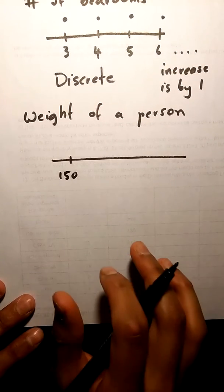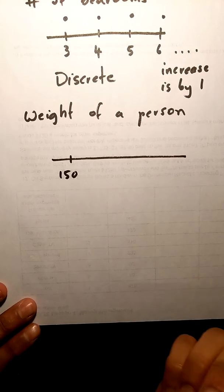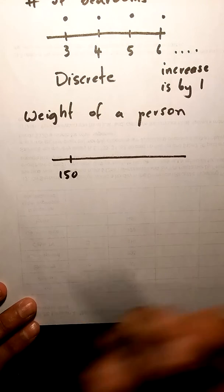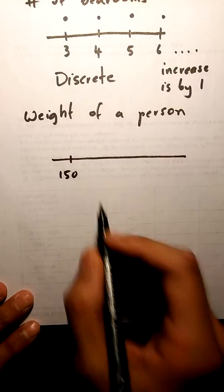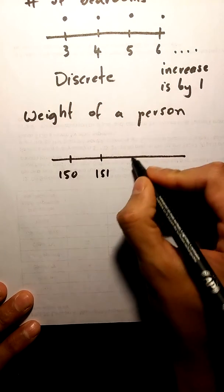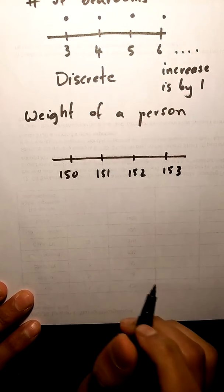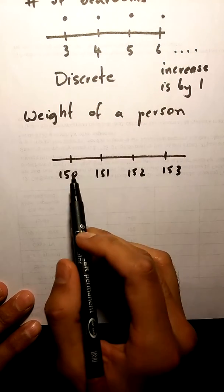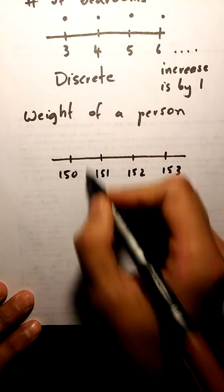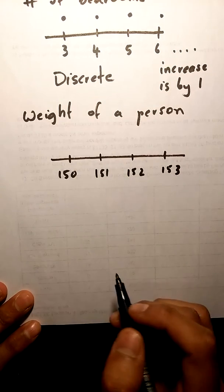If I want to increase this weight, what could I pick? Well, I could pick honestly any number I wanted bigger than 150. So what I'm gonna do is I'm gonna pick 151, 152, 153. Now if I'm looking between these values, can I pick a value between 150 and 151?